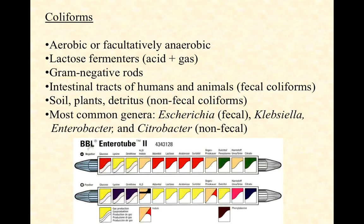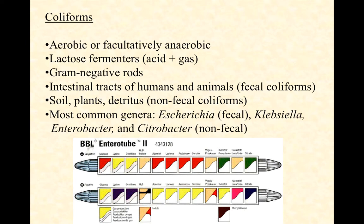Here are some features of the coliforms. They are aerobic or facultatively anaerobic, they are lactose fermenters producing both acid and gas, and they are gram-negative rods. They can be found in the intestinal tracts of humans and animals — we call those fecal coliforms. They can also be found in the environment, like soil, the surface of plants, and detritus — dead and decaying plant and animal matter — which we call non-fecal coliforms. The most common genus is Escherichia, the type strain of fecal coliforms, with literally hundreds of known strains. Three important non-fecal coliforms are Klebsiella, Enterobacter, and Citrobacter.